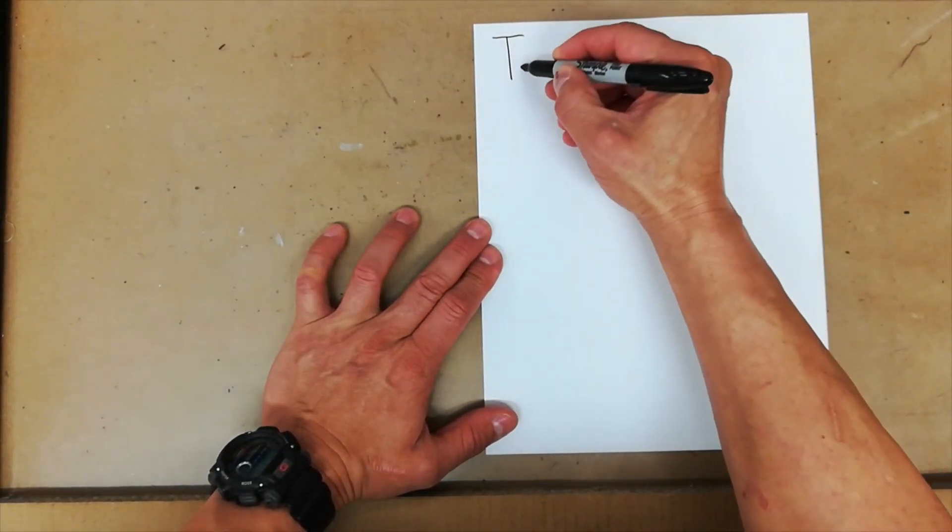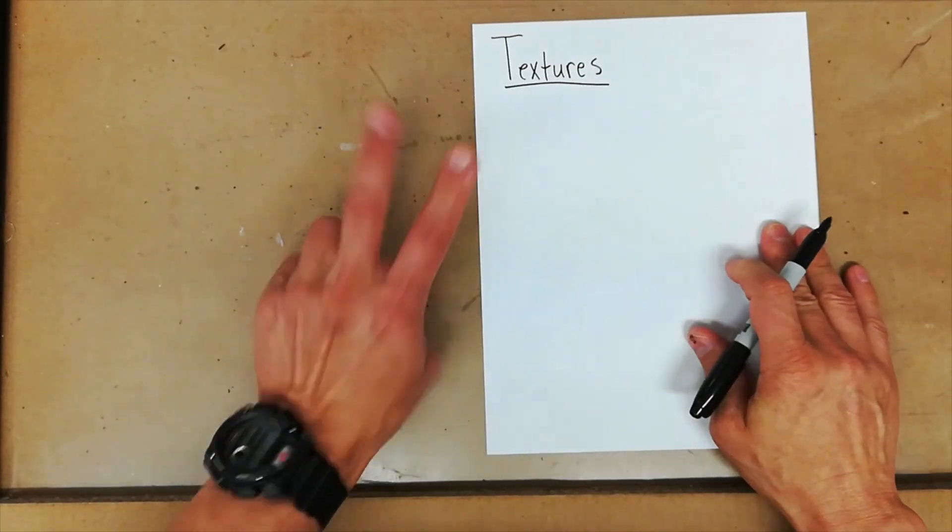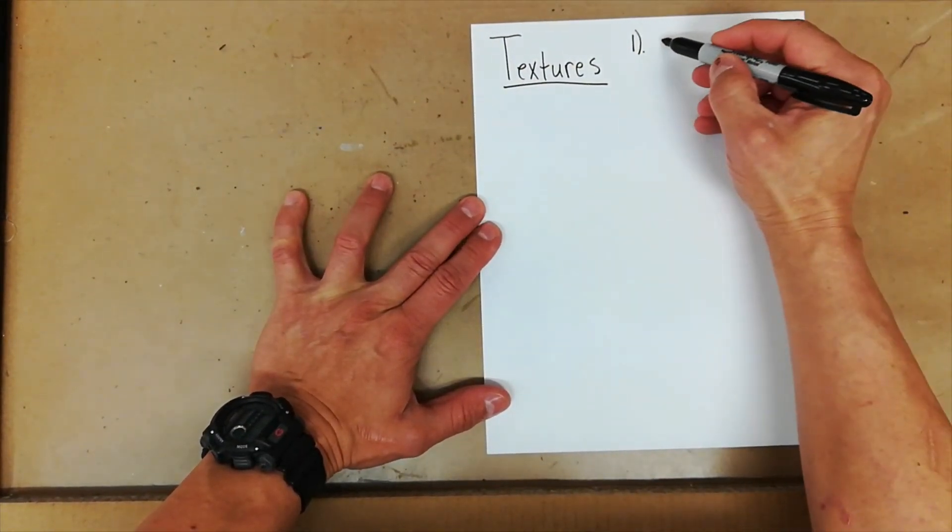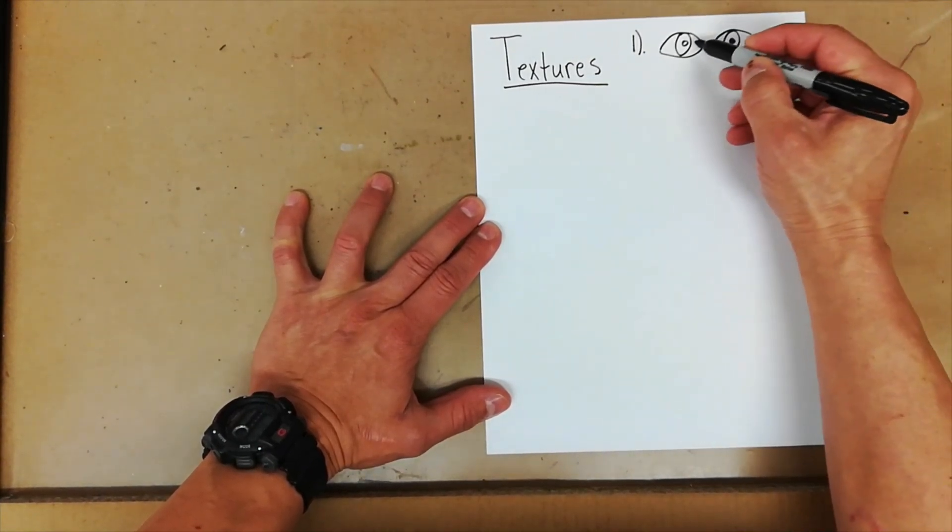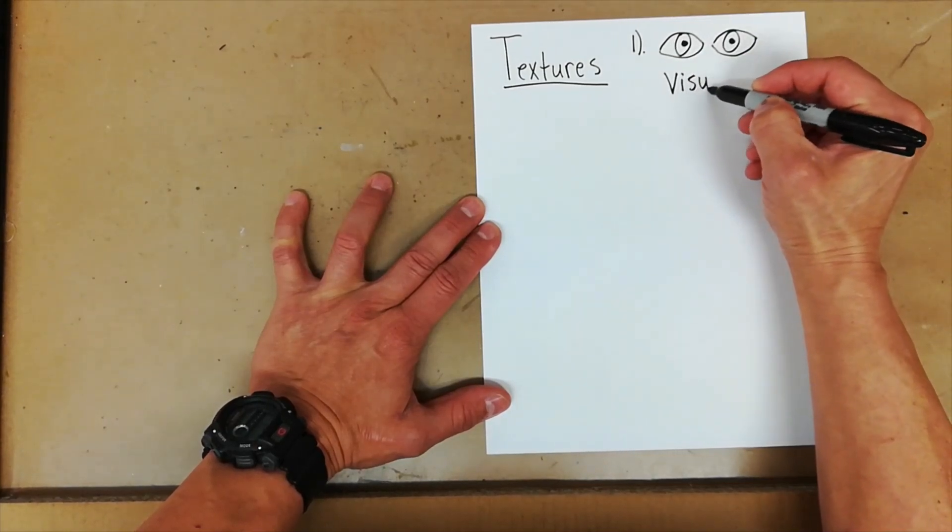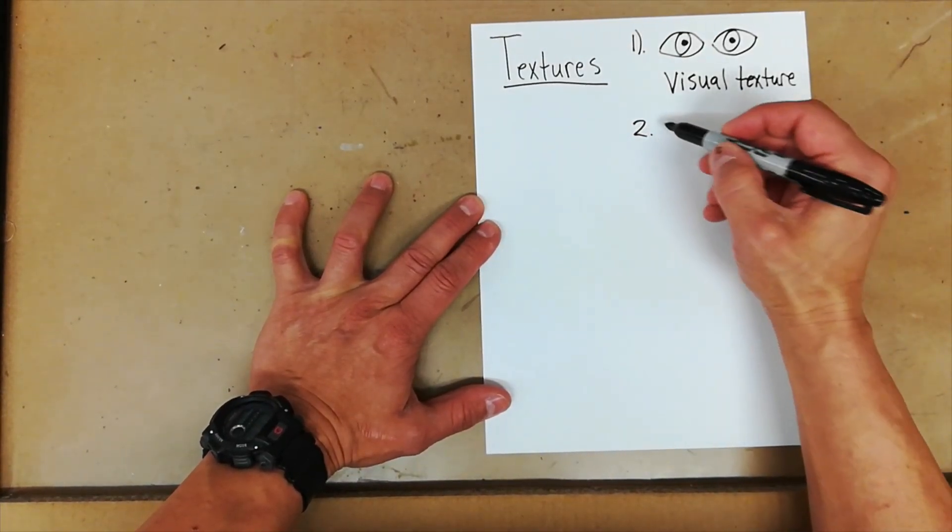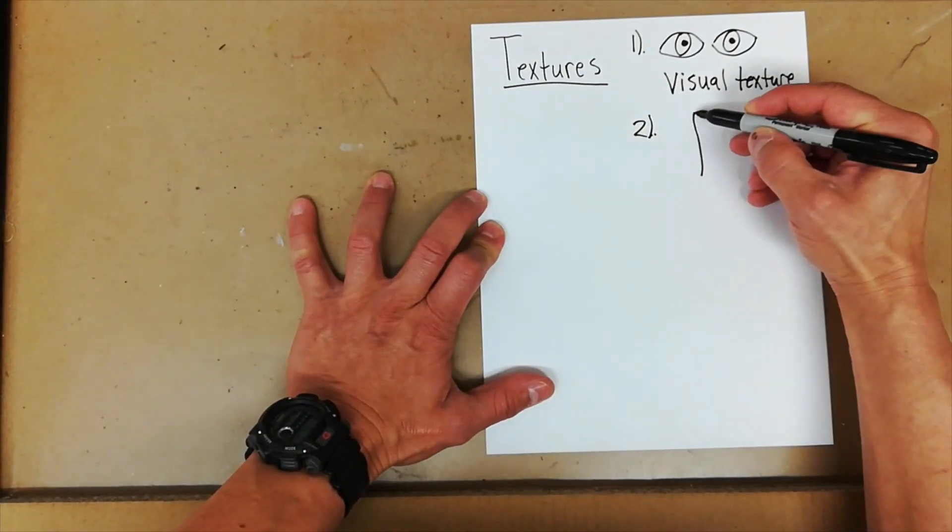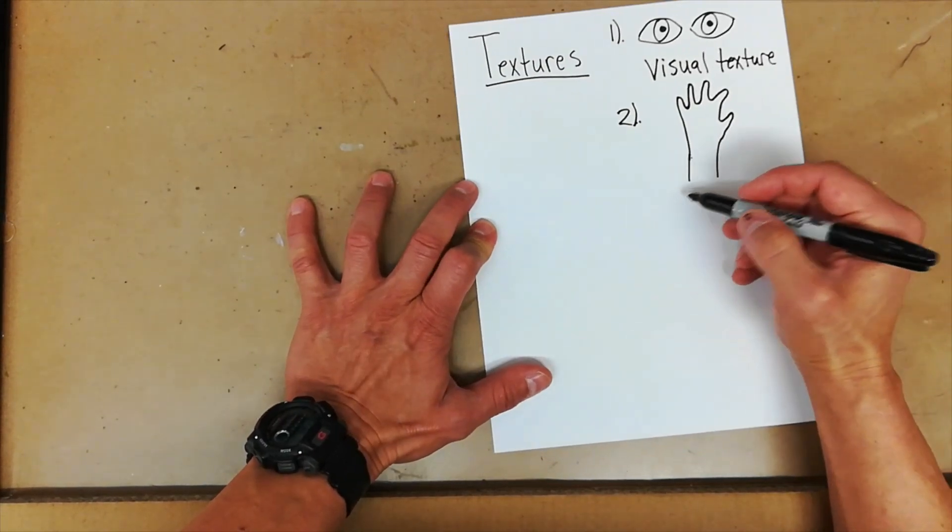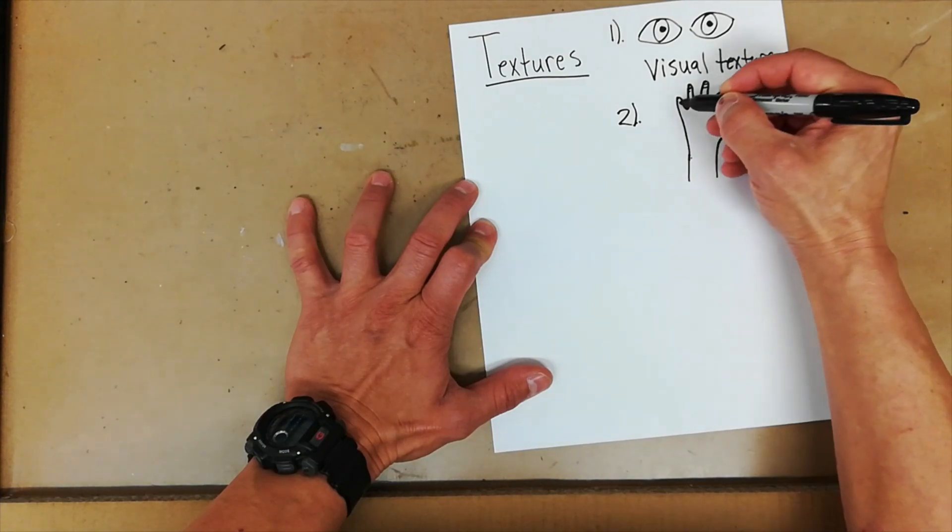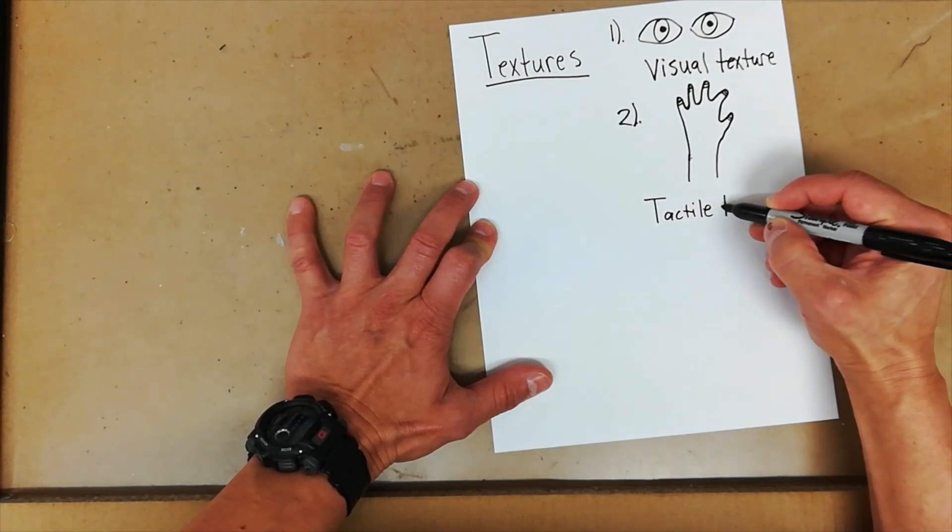We're talking about textures. There are two types of textures. The first is visual texture. I like to draw eyes because that's what we use to see. Visual texture. The second type of texture is tactile texture. That's supposed to be a hand. I drew it really quickly. It's all good. Tactile texture.